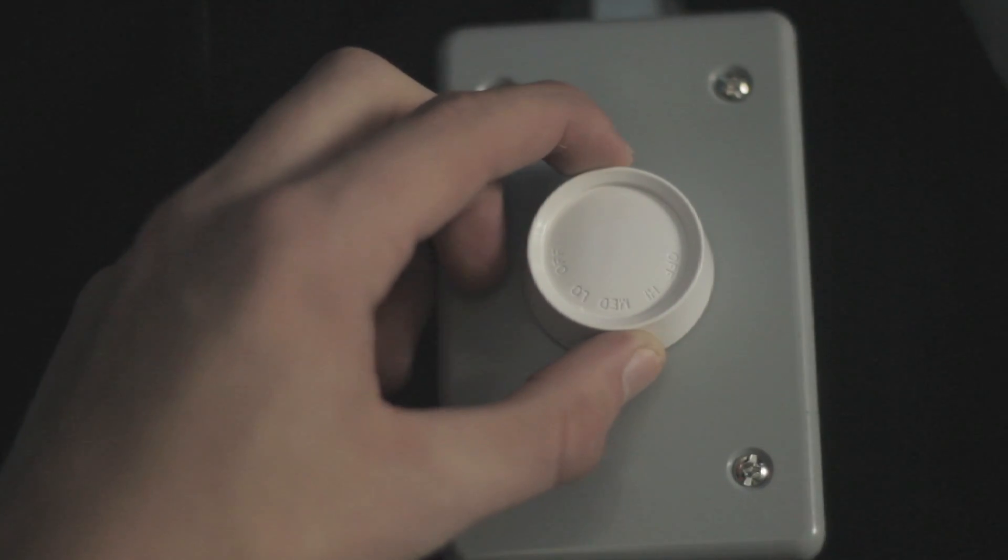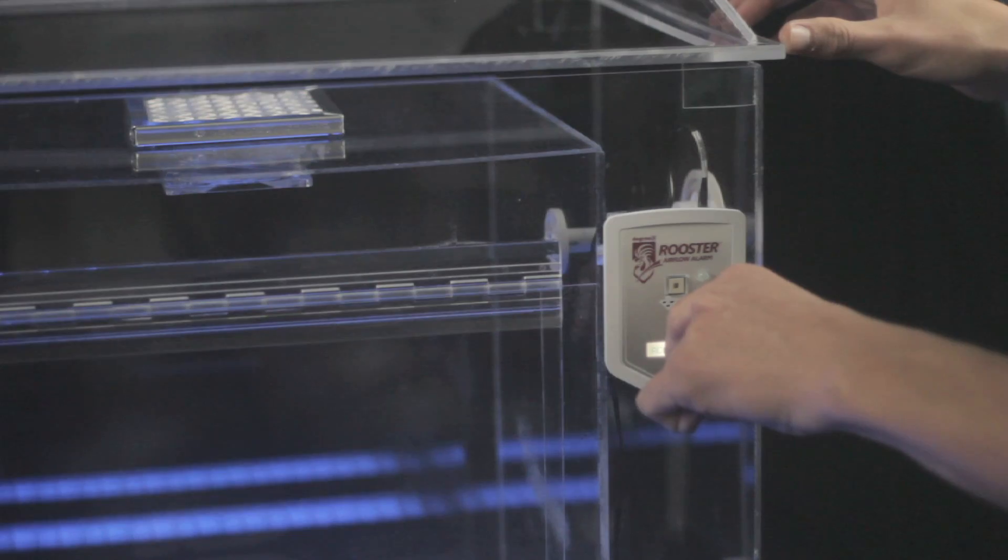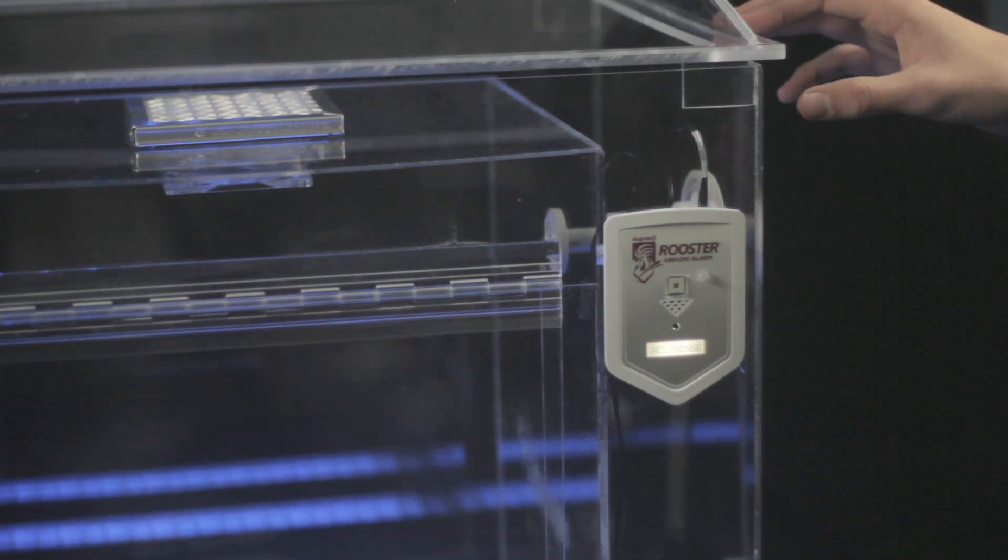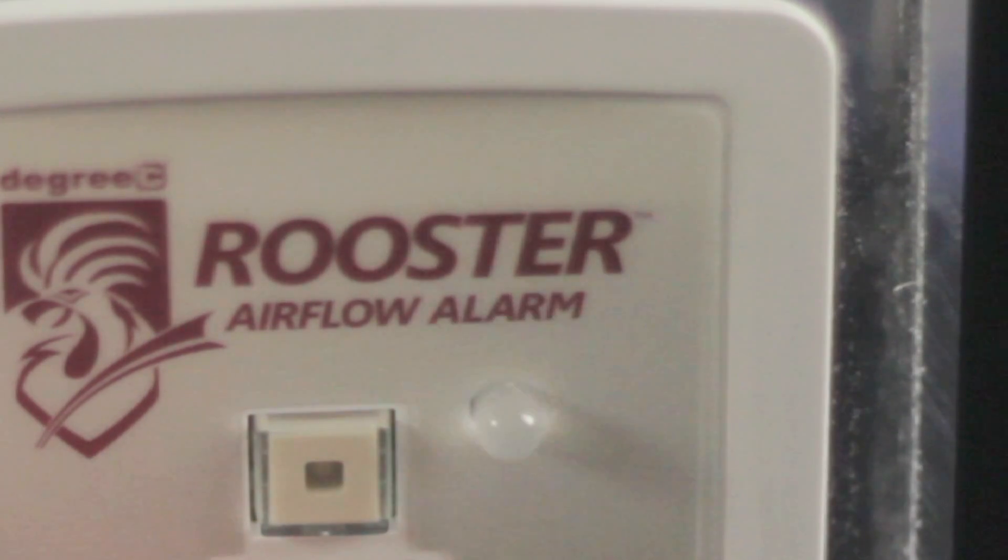To calibrate the Rooster, turn the biosafety cabinet on and bring it up to proper operational air velocity for your intended use. Use a paper clip to press the recessed button on the faceplate for three seconds and the Rooster will perform its self-calibration test.